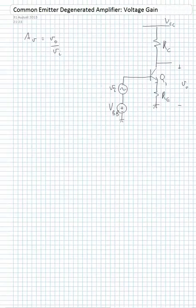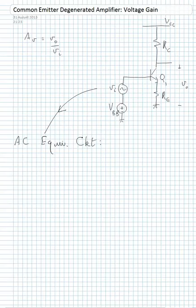To do this, we'll need to replace this circuit by its AC equivalent circuit, which will mean all DC sources will be set to ground and Q1 will be replaced with a hybrid-pi model for a BJT.